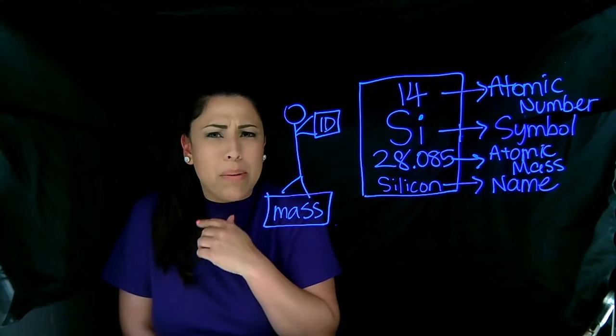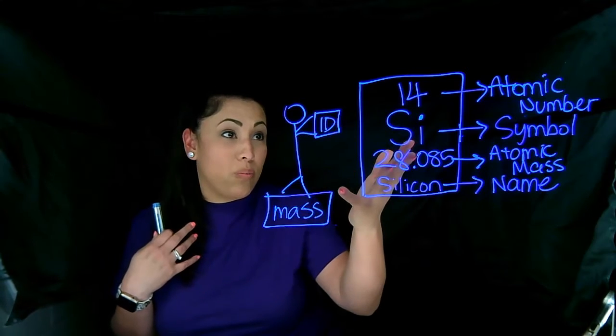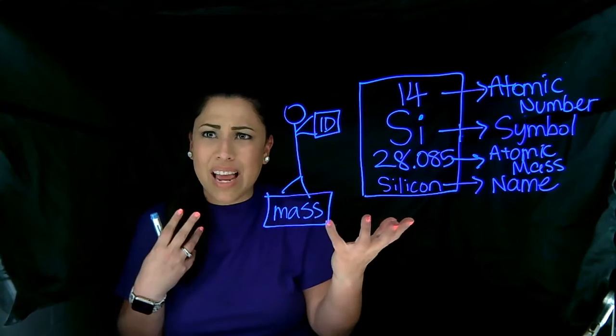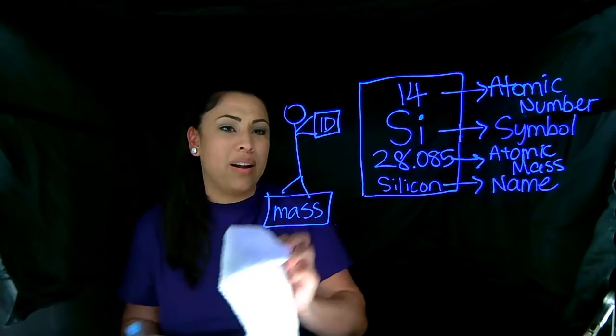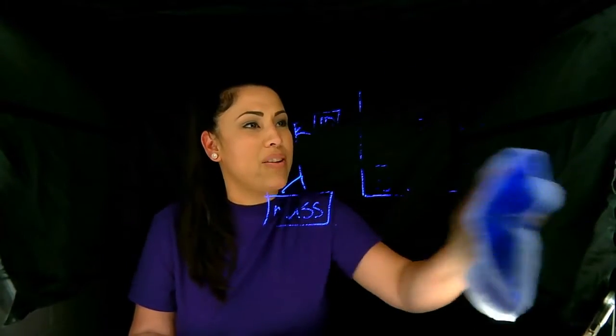Now what about the other subatomic particles? How are we going to figure out how many electrons and neutrons silicon has? Go ahead and go to the next page. And remember if I have it, you have it, right along with me. And now we have our ape man to the rescue.